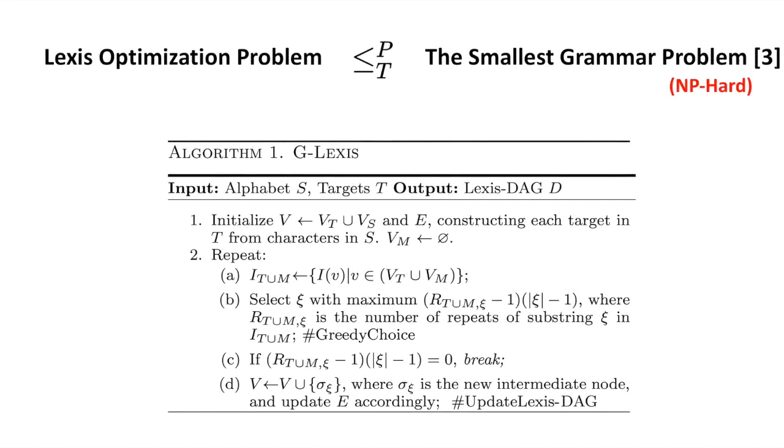The Lexis optimization problem is related to the smallest grammar problem, and through this relation, we prove that it is NP-hard to solve.